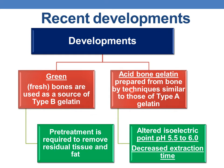The second recent development is acid bone gelatin. As the name indicates, acid bone gelatin is prepared from bone by techniques similar to those of type A gelatin. The only difference between type A gelatin and acid bone gelatin is in their isoelectric point. The isoelectric point of type A gelatin is at pH 9, whereas the isoelectric point of acid bone gelatin is at pH 5.5 to 6.